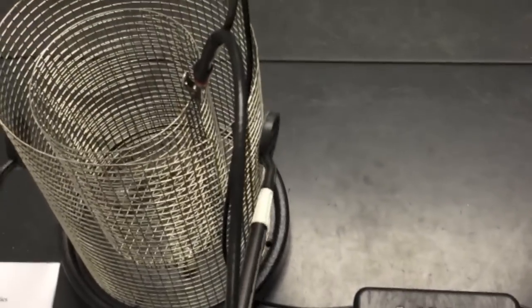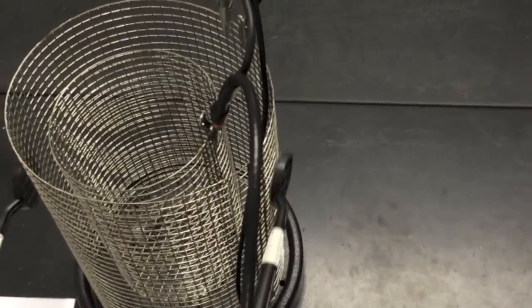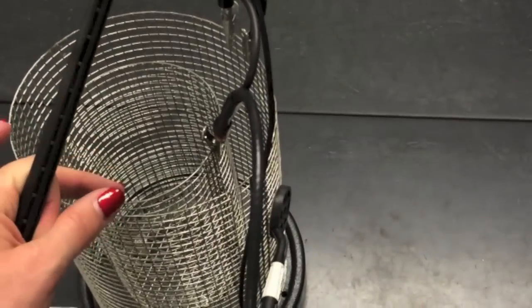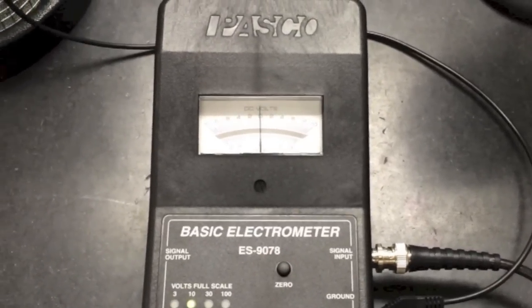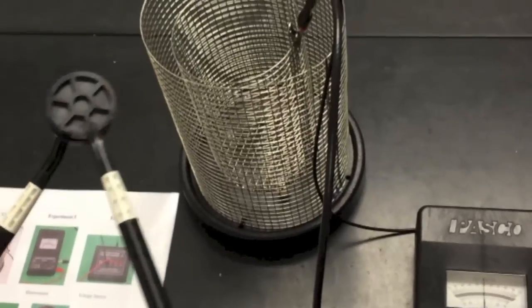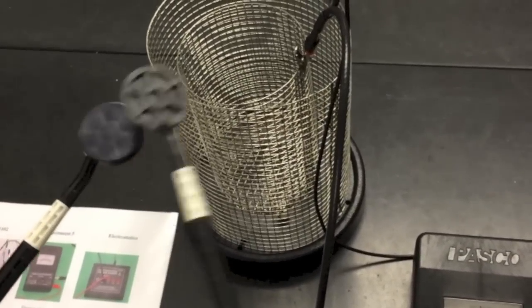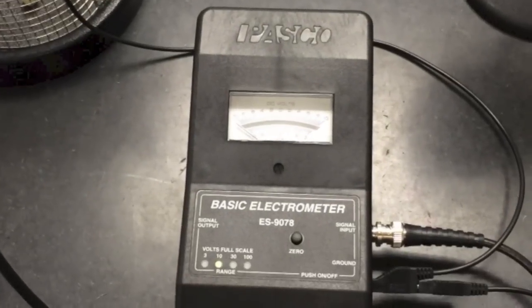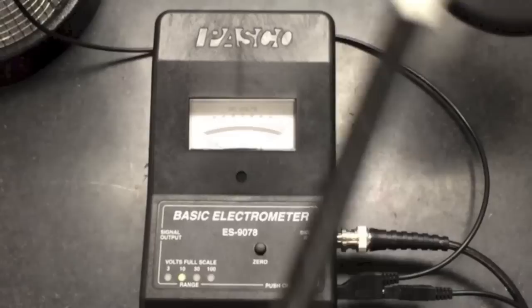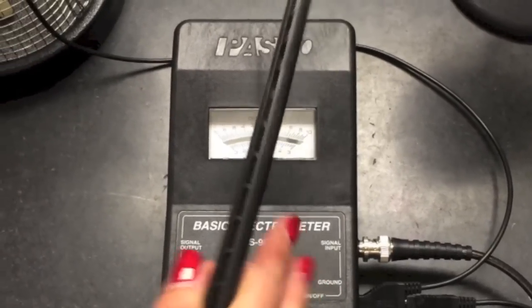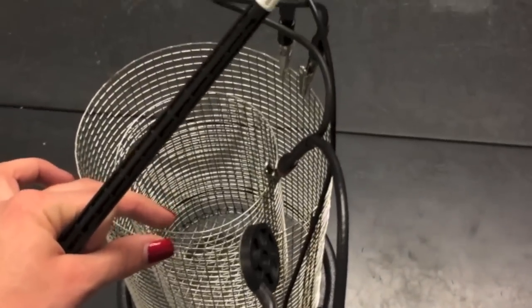Now discharge your wands. Make sure you discharge yourself as well. Check if you are discharged. Zero the electrometer. Now rub these wands together again. This time insert the blue wand and touch the Faraday's ice pail. Remove the wand and you will see that the reading will stay negative because now you transferred all the charge from your wand to the Faraday's ice pail.